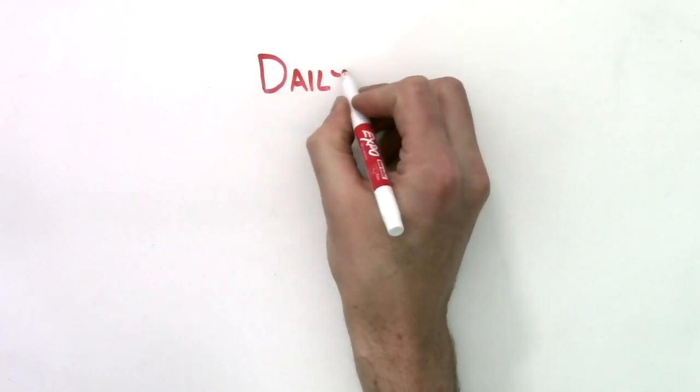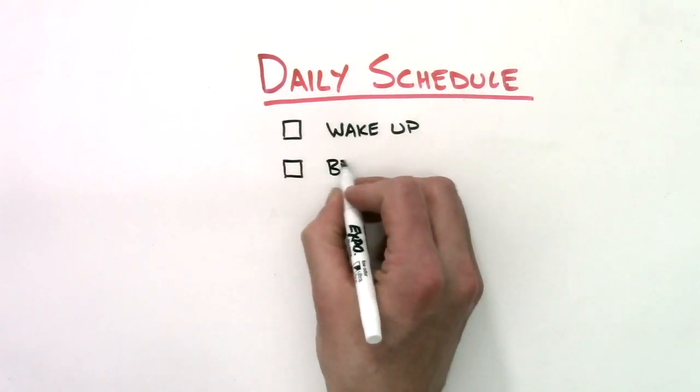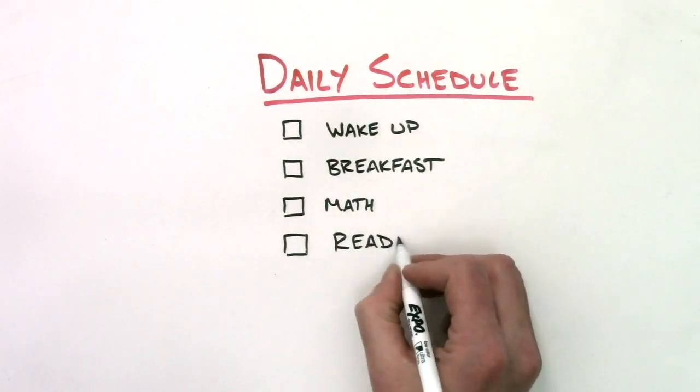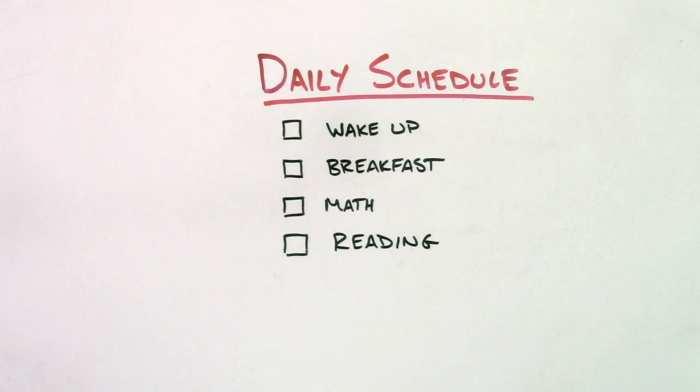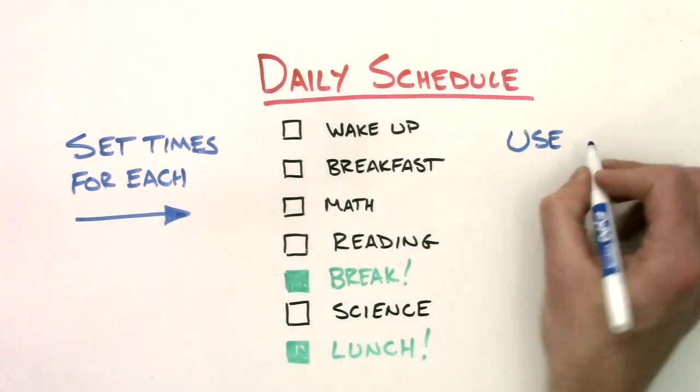You can also help your child write a schedule for each day and the week as a whole. Having a clear vision of what's expected of your child will help them see that just because they're home doesn't mean they don't have work to do. But when you do create a schedule, be sure to include break times. Setting alarms similar to those they'd encounter at school can be helpful for keeping them on a schedule.